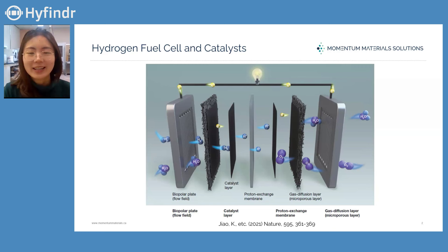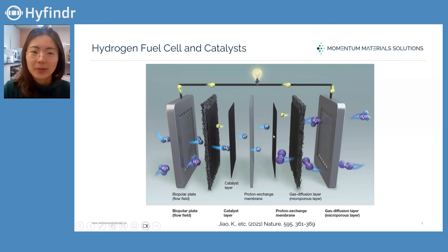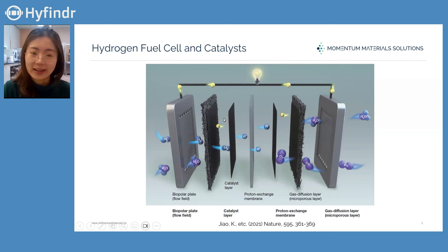Okay. And where is the catalyst located in the actual fuel cell? From this slide you can see a single fuel cell — I'm only talking about a proton exchange membrane fuel cell. In a single fuel cell, it has a bipolar plate and within it is a membrane electrode assembly, which is composed of multiple layers. The catalyst layer is composed of catalyst and a support material.